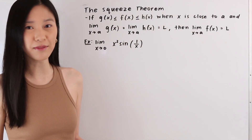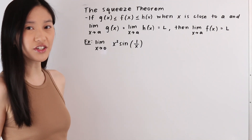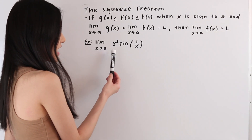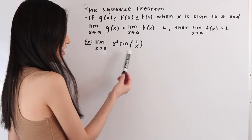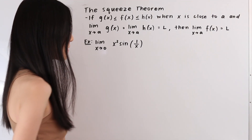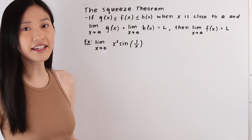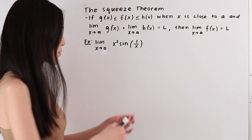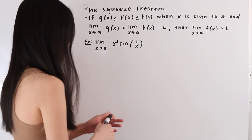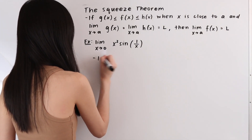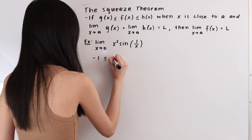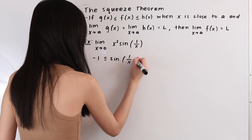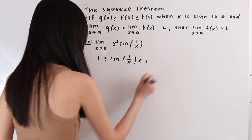Let's go ahead and take a look at some examples. In this first example, we have the limit as x approaches 0 of the function x² sin(1/x). We know from the graph of sine that sine is bounded between 1 and negative 1, so we can write the following: negative 1 ≤ sin(1/x) ≤ 1.